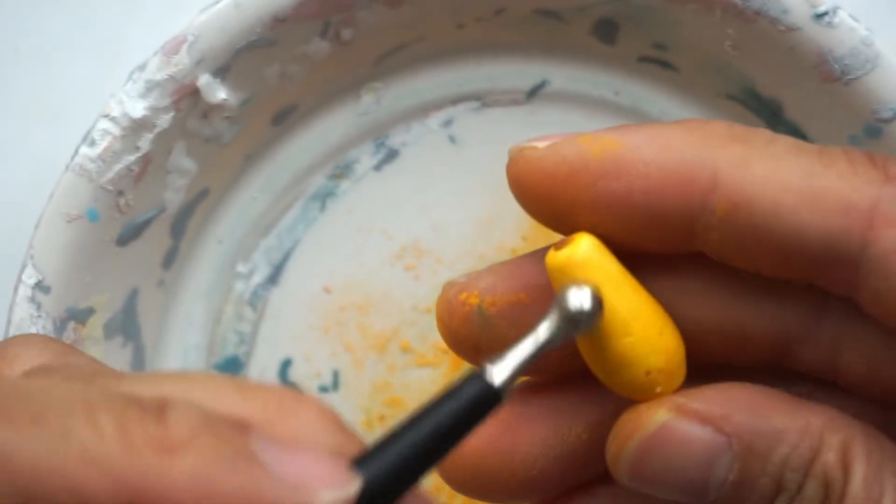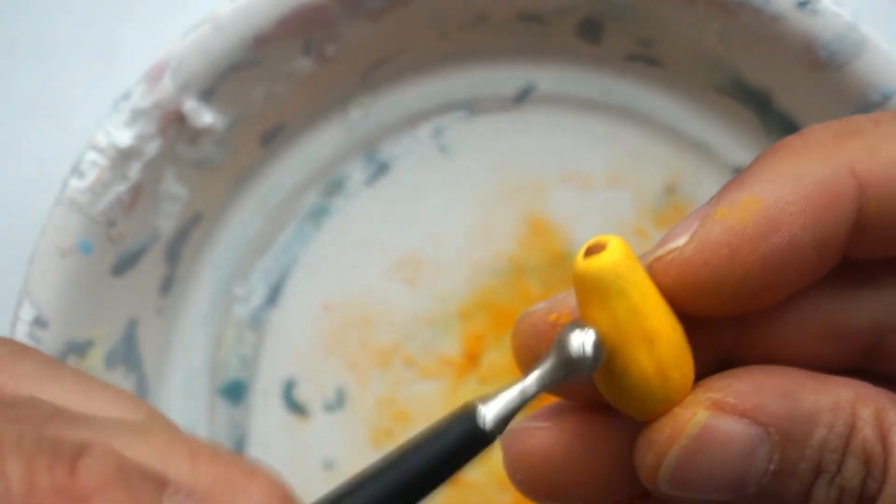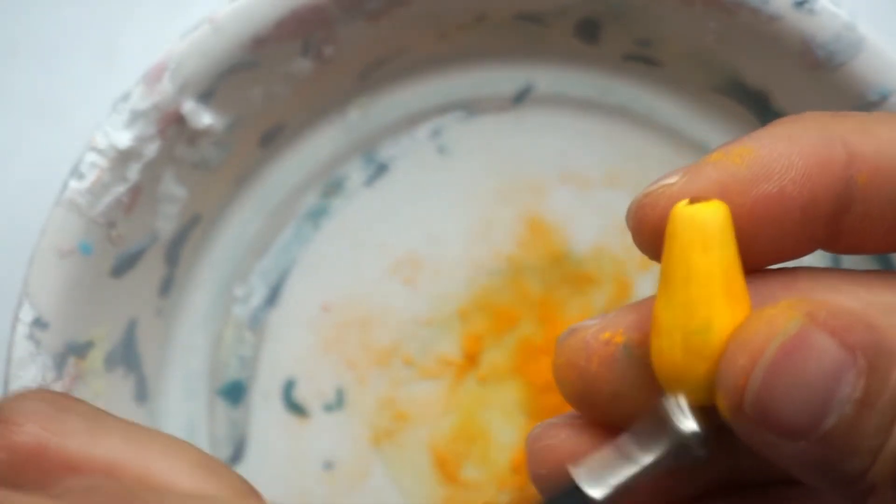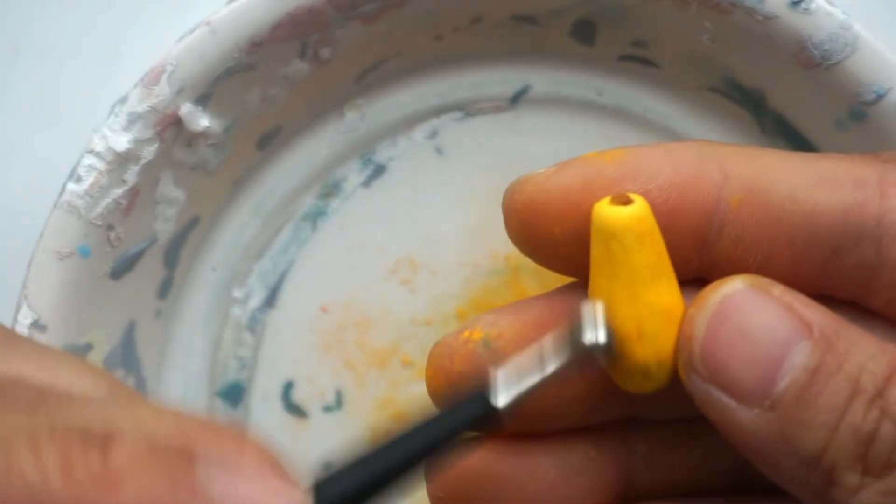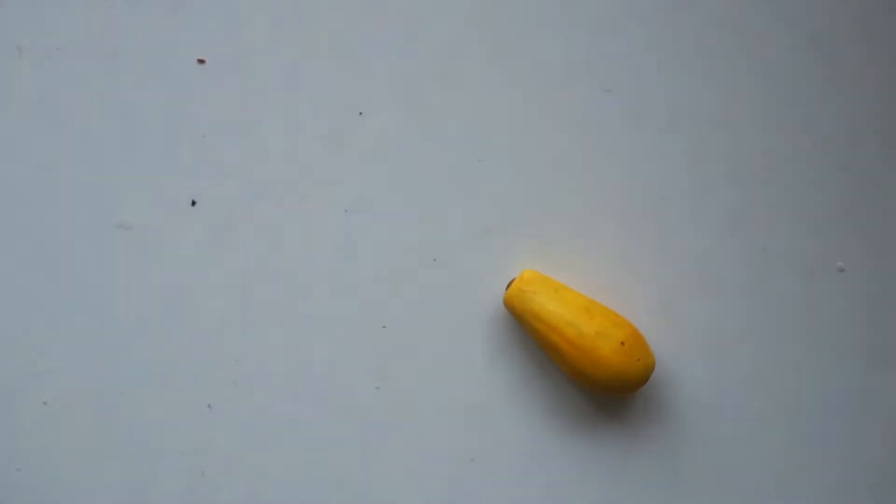And then before adding the green shade, create a texture around the papaya. You can create the texture before adding the shades, but I find it best to add the texture after the first shading. Because the next shades won't blend so much with the first shade, creating a more realistic effect.